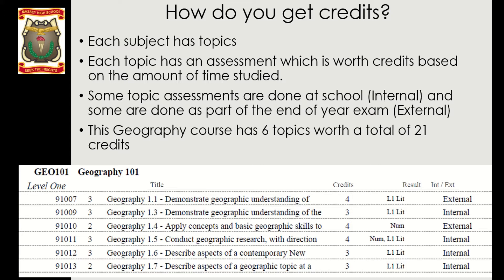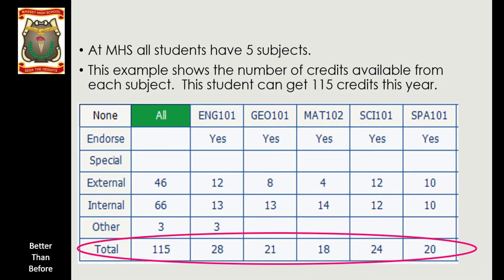Looking at how that works with Level 1: students at Massey High School take five subjects, which on average have roughly 20 credits assigned to them. This particular student's subjects add up to 115 credits. What that means is that students don't need to get all the credits to pass NCEA Level 1 — there is a little leeway in case mistakes happen and they perhaps don't achieve some things. It's not all or nothing, because there's that extra area to fall back on.